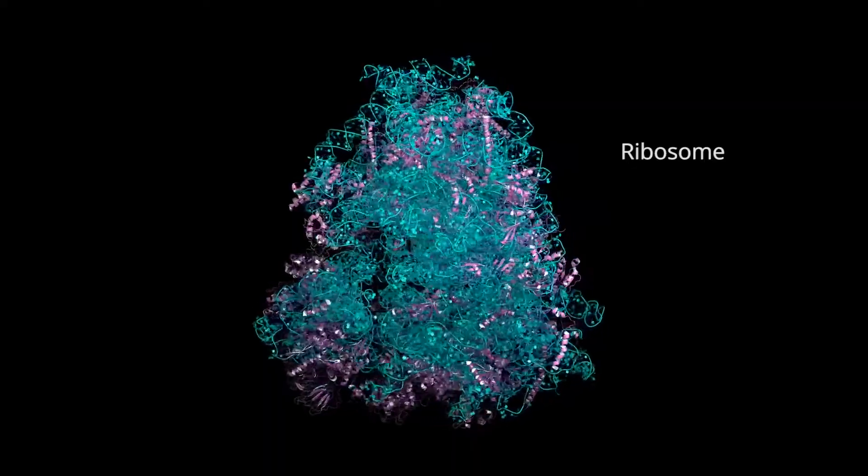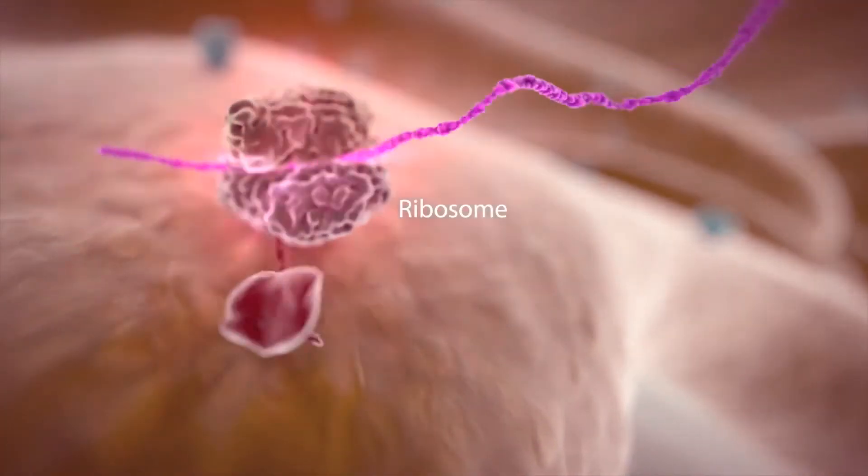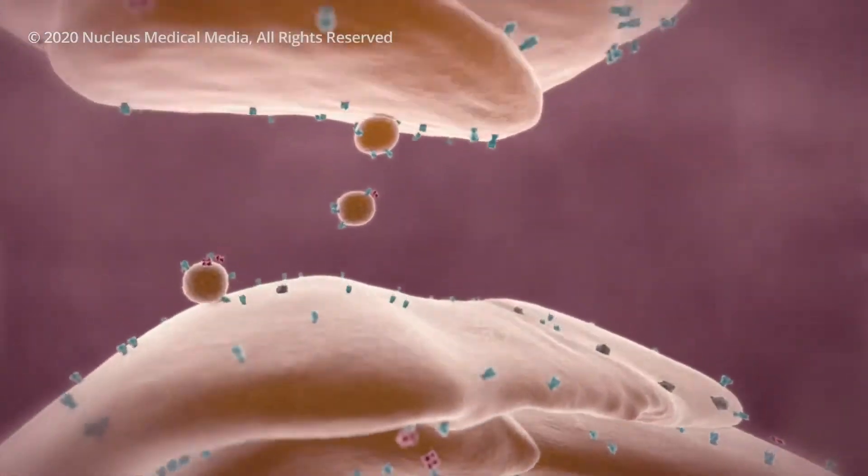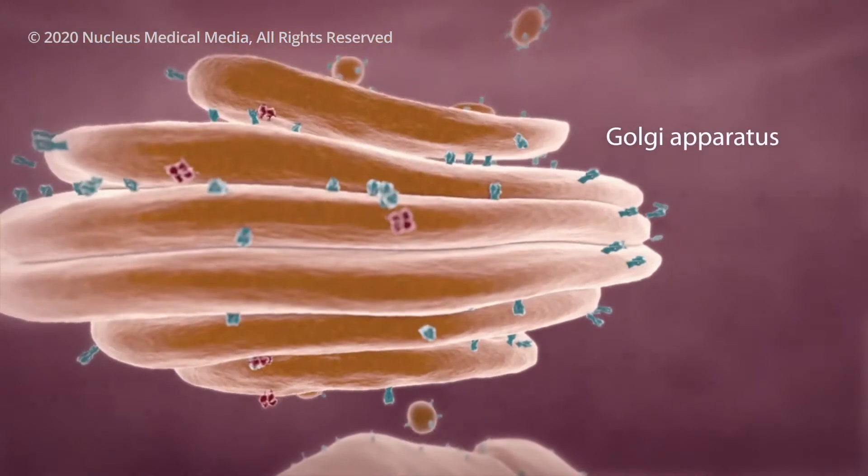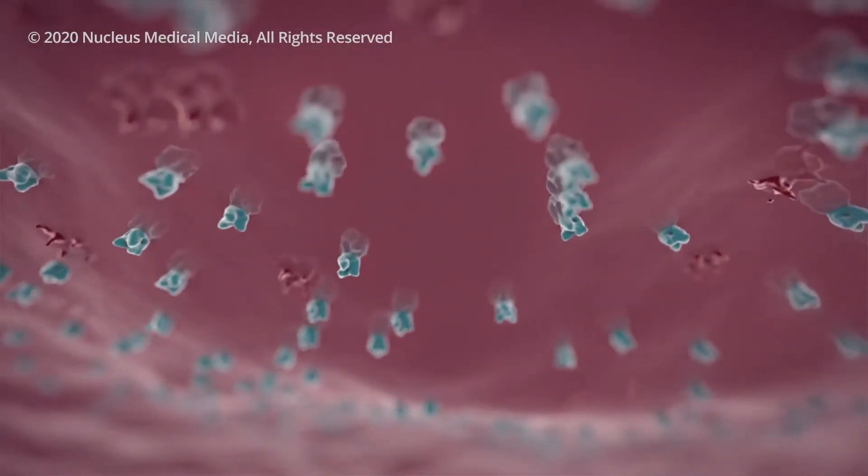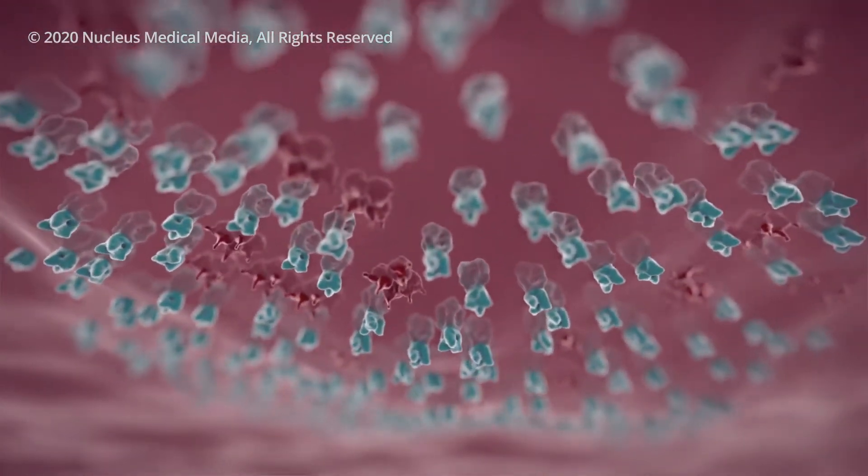Ribosomes use genetic information from the virus to make viral proteins, such as the spikes on the virus's surface. A packaging structure in your cell then carries the spikes in vesicles, which merge with your cell's outer layer, the cell membrane. All the parts needed to create a new virus gather just beneath your cell's membrane.